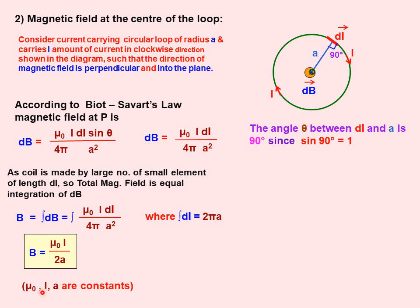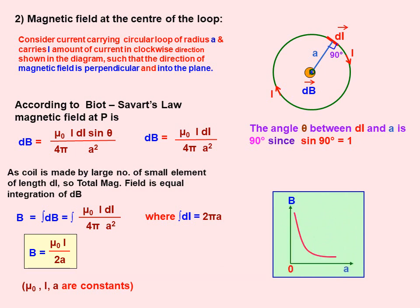Where µ₀, I, and a are constants. As the radius A increases — that is, as we go away from the center — the magnetic field at point DL is maximum near the wire, but as the radius of the circular loop increases, its magnetic field decreases drastically. Magnetic field is more near the conductor, and as we go away from the center, the magnetic field goes on decreasing. This is the significance of this result.